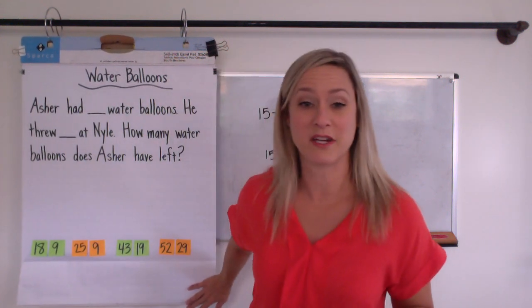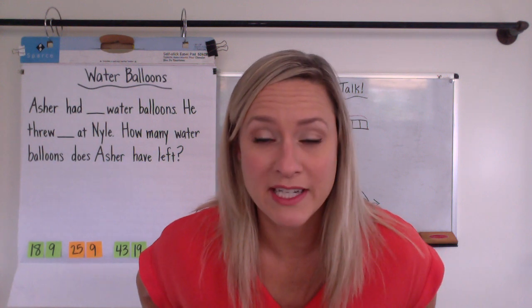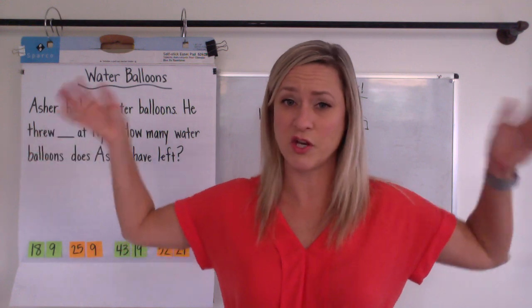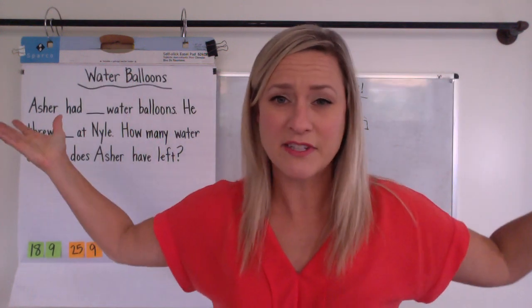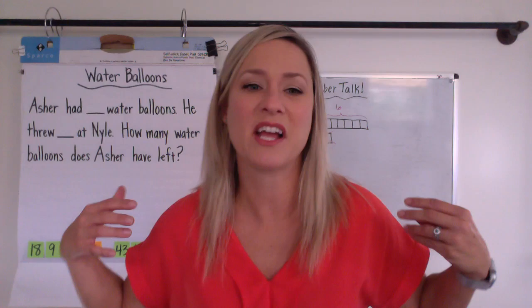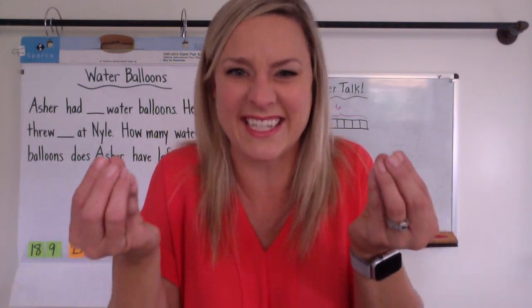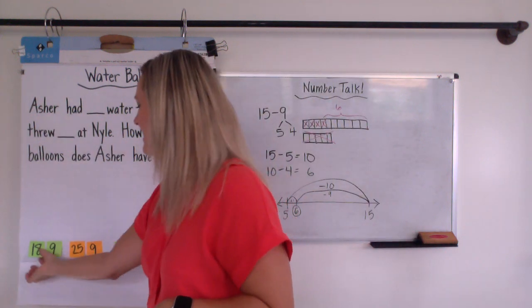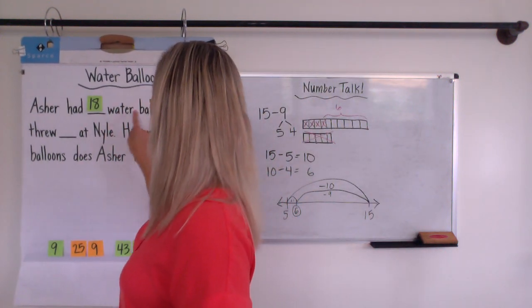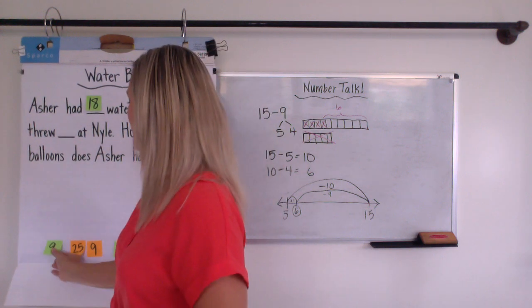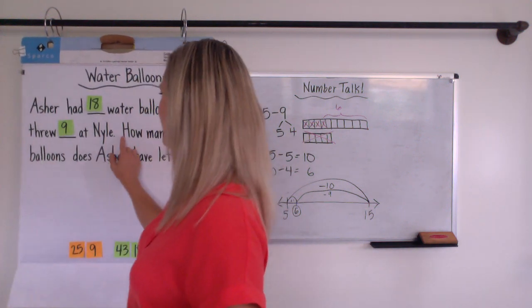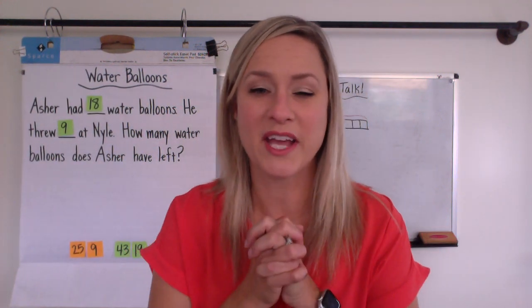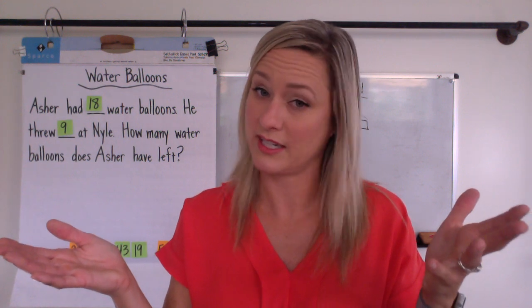You have four sets of numbers to choose from. Here's the deal. Just like picking a just right book, you've got to pick just right numbers. If it's too easy, there's no brain stretching and growing. If it's too hard, your strategy is going to stink. You've got to pick the one that feels like you've got a good strategy and it's just right. Okay, so Asher had, I'm going to choose this one, 18 water balloons. He threw 9 at Nile. How many water balloons does Asher have left? It's up to you. You've got to go figure it out now.